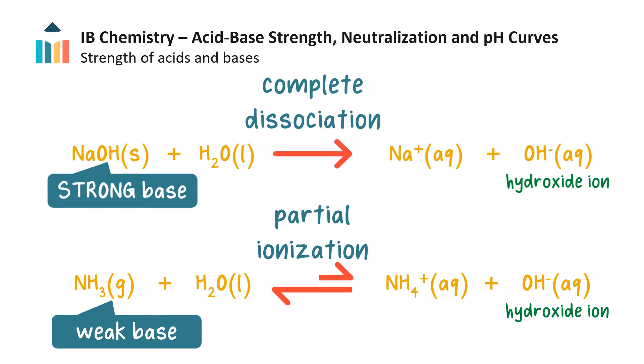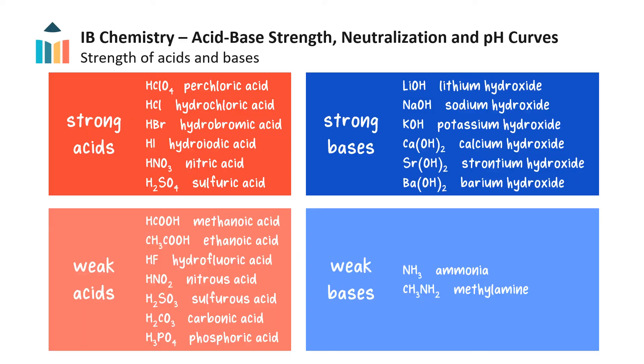We can similarly describe bases. Bases that dissociate fully into ions in solution are strong bases, for example, sodium hydroxide. And bases which dissociate or ionize partially are called weak bases. Ammonia is an example of a weak base. In aqueous medium, it ionizes to only a small extent, forming a low concentration of ions. Here are some common examples of strong and weak acids and bases. It will be helpful for you to know these examples.